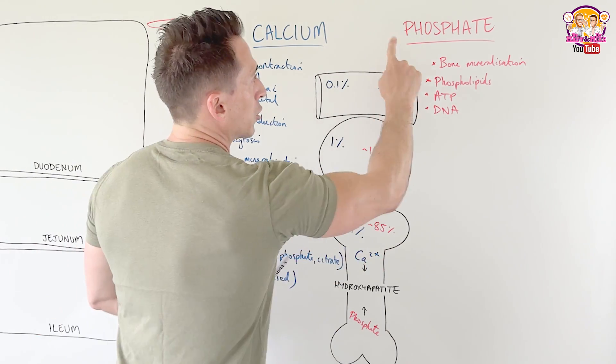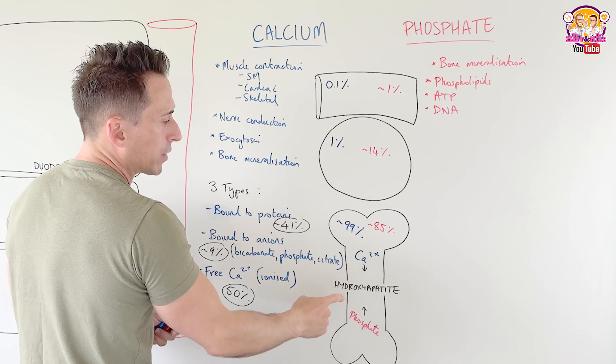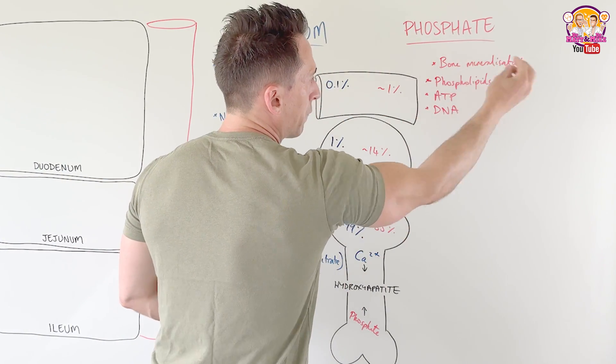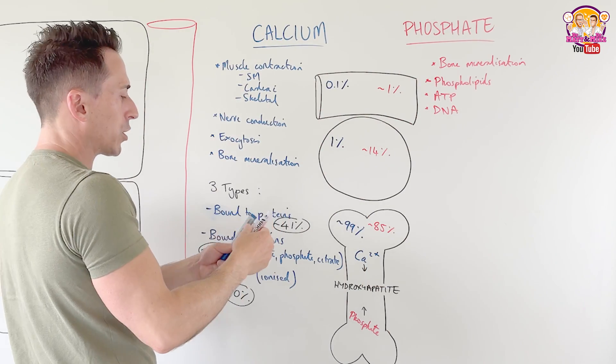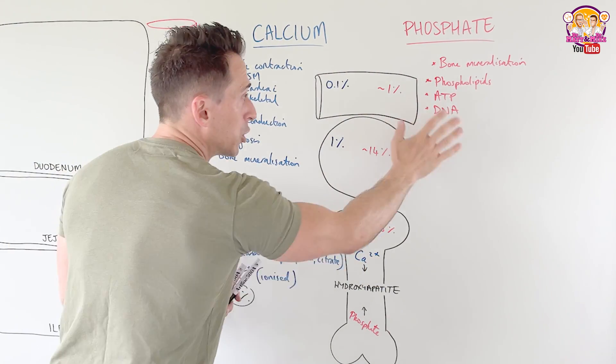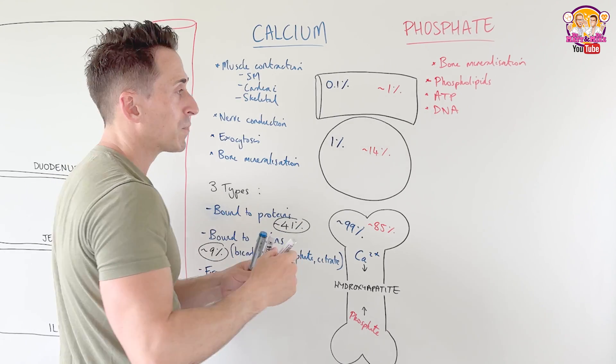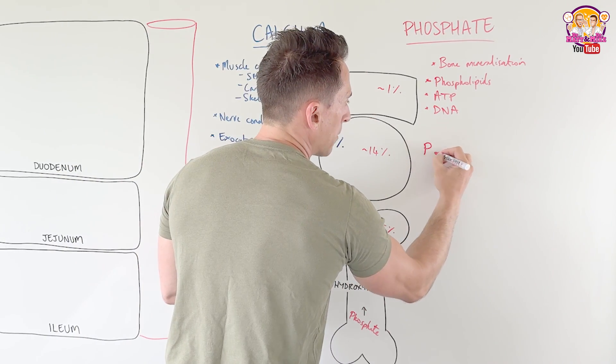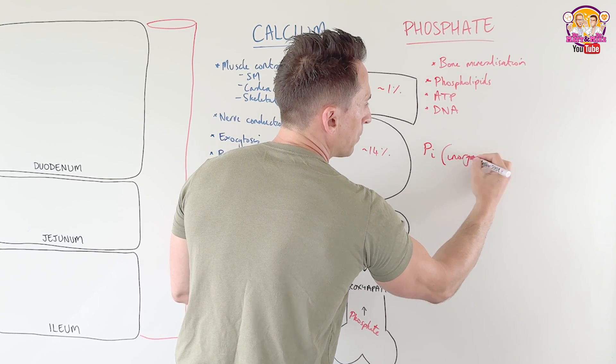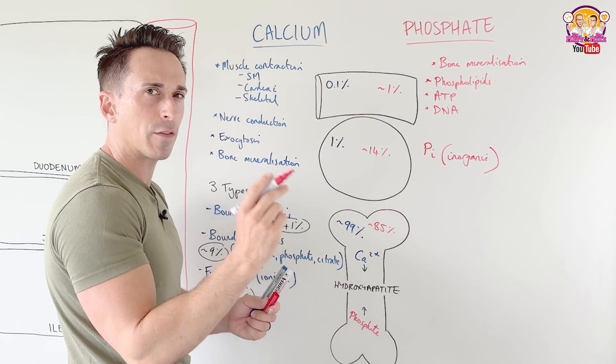Now, you've got phosphate in bone as hydroxyapatite. So is calcium. You've got phospholipid bound within phospholipids, ATP and DNA, but you've also got, like you've got your free calcium, the ionized form, you've got your free phosphate. Now what we call this is PI. That stands for inorganic phosphate. You might think, well, what's the organic phosphate? This is phosphate in the organic form.